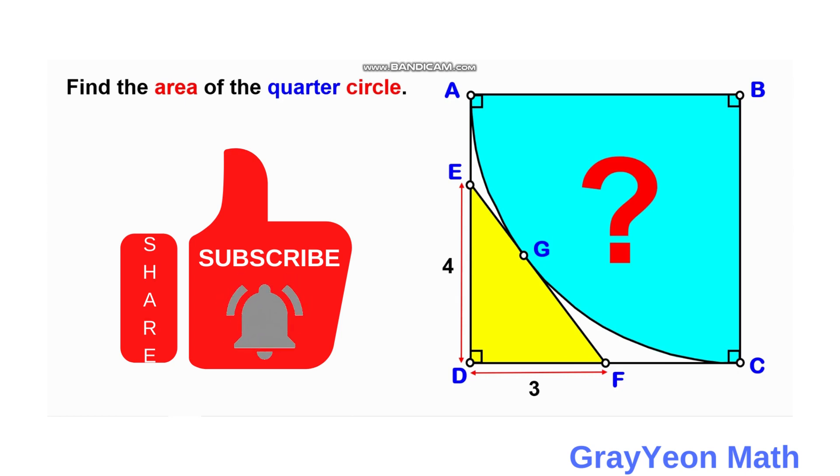Welcome to Greyon Math. We are asked to solve this problem. We have a square and inside this square is a quarter circle and a right triangle.